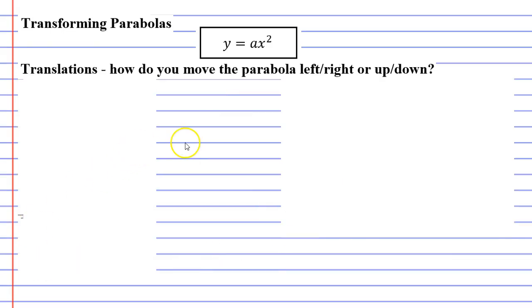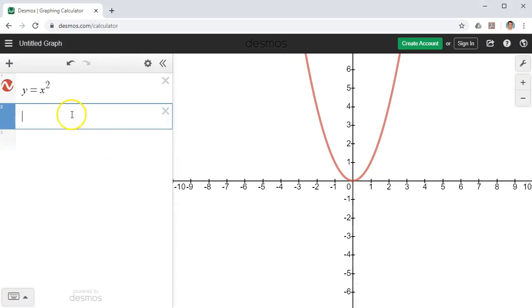So we'll look at our third and final transformation, which is our translation. How do you move the parabola left, right, up, and down? So we'll bring up Desmos again. And we've got our basic parabola y equals x squared.